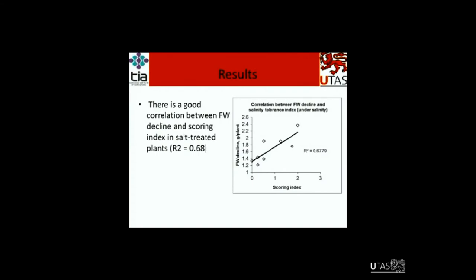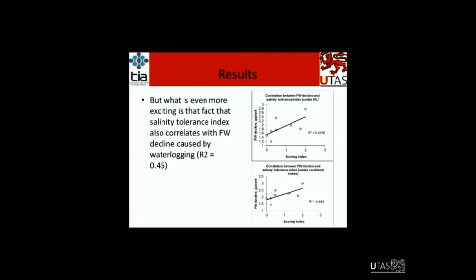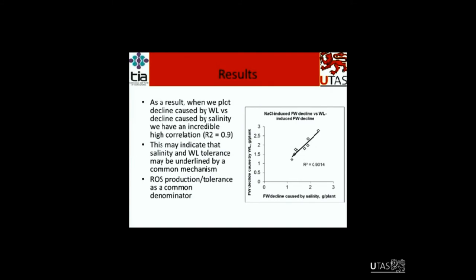Preliminary results: as this is my introductory seminar and I haven't analyzed all the data yet, I'm still working through the Excel analysis. But briefly, I found a good correlation between fresh weight decline and a scoring index in salt-treated plants. The scoring index ranges from zero, referring to plant survival, to four, referring to totally dead plants. More excitingly, the salinity tolerance index also correlates with fresh weight decline caused by waterlogging, at about 0.45. And when we plot fresh weight decline caused by waterlogging against decline caused by salinity, we see an incredibly high correlation of around 0.9.